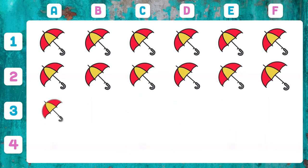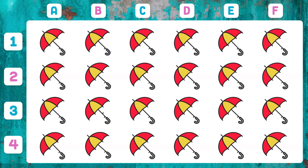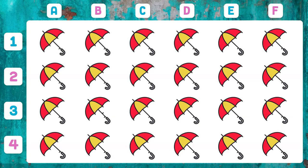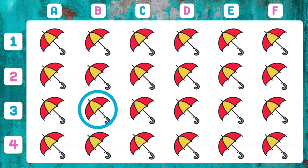Take a good look at these umbrellas — there is one that has something different from the rest. The umbrella that appears in 3B has a different pattern from the rest.